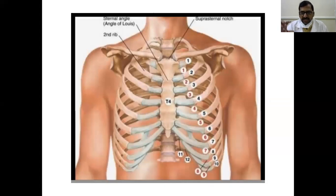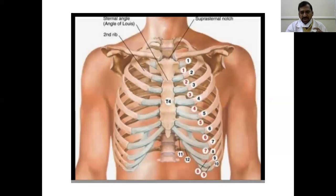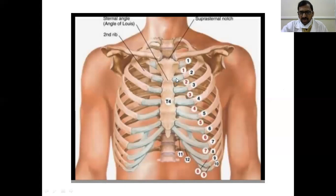The first important point about the sternal angle: it is a very important landmark for counting the ribs. Because when performing many procedures on the thoracic wall, you must know at which vertebral level you are entering the thoracic cavity. The second rib corresponds at the level of the sternal angle. So if you want to count — third, fourth, fifth — you can count from there. That is the most important point.